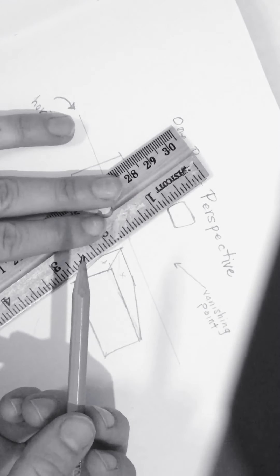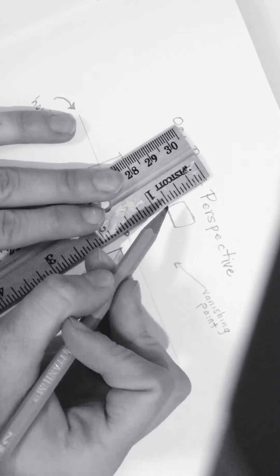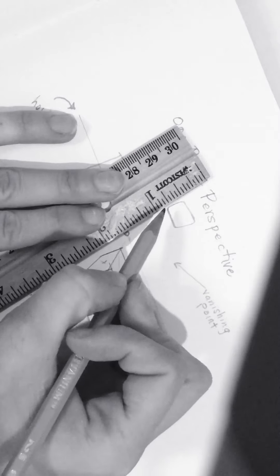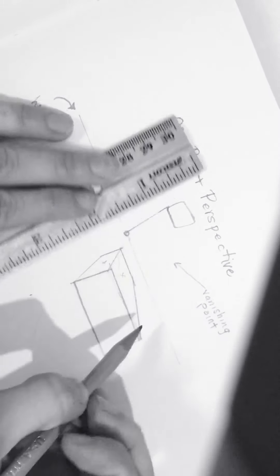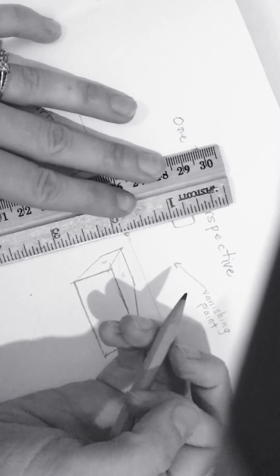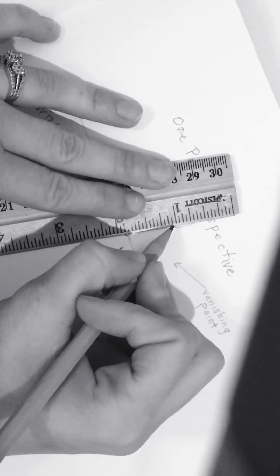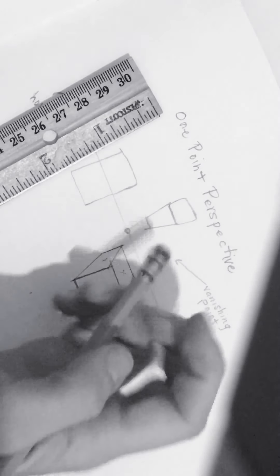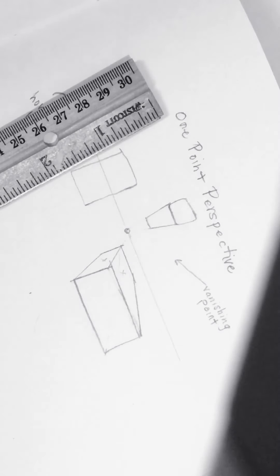So if I'm doing exactly the same process that I did down here, only up here, I'm going to line my ruler up with the vanishing point and to the corner of my box. And then same over here.